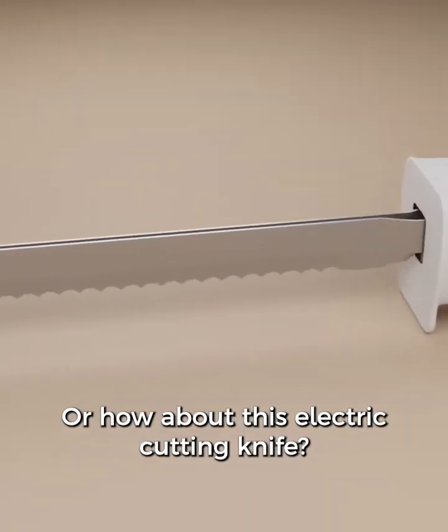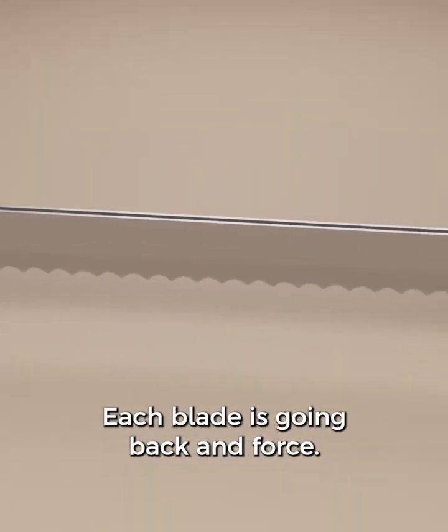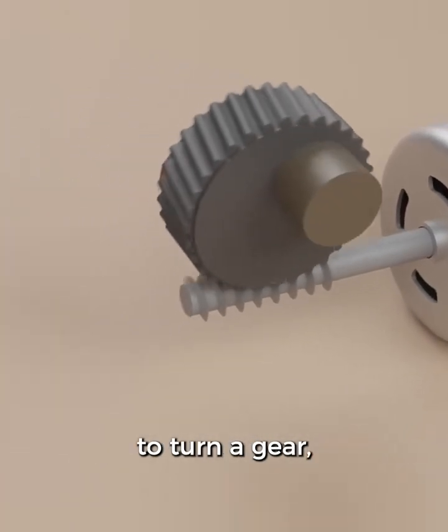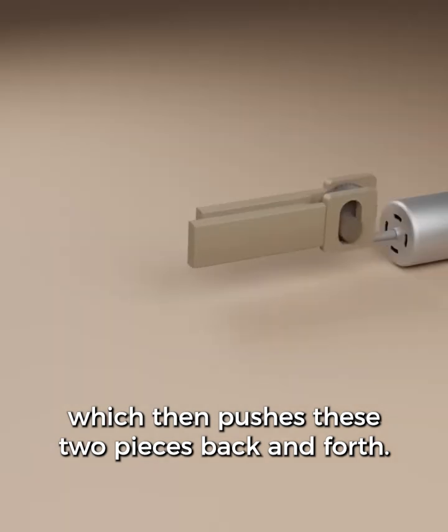Or how about this electric cutting knife? Each blade is going back and forth. It all starts with the spinning of the motor to turn a gear, which then pushes these two pieces back and forth.